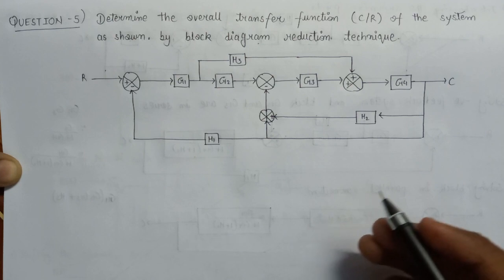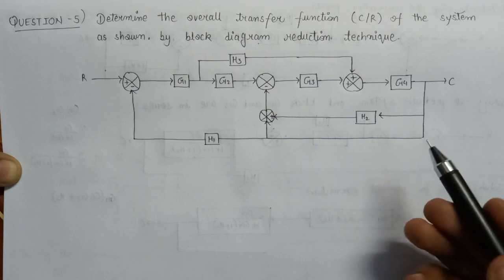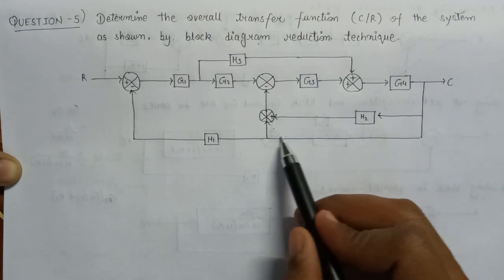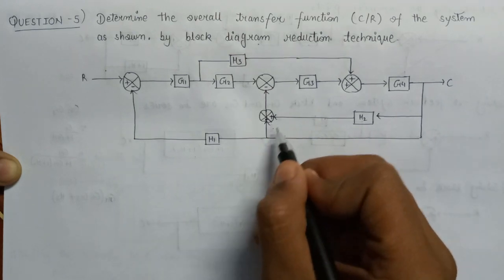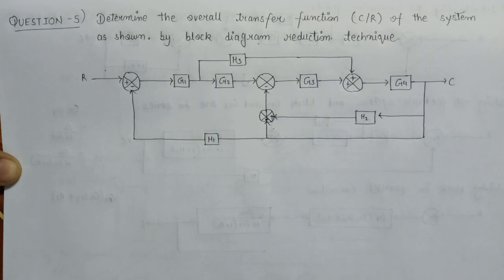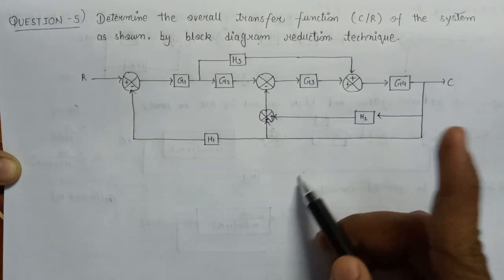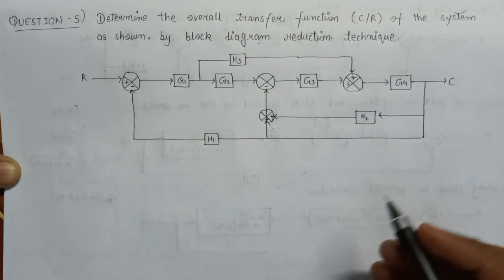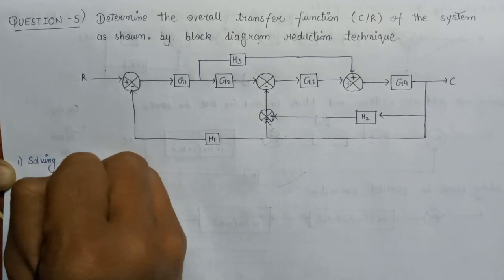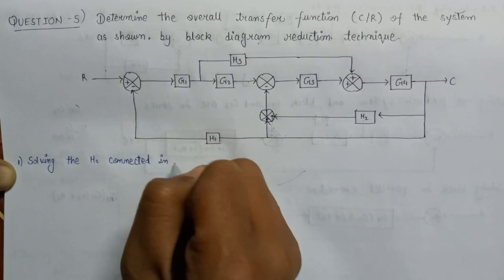Let's initiate the block diagram reduction technique. We need to find the point of initiation. Here is a feedback gain h2 that is connected in parallel with this branch, and both will get added up with this summer. Here the polarity is plus on both sides, so we can write h2 plus 1, or 1 plus h2, since the gain of the direct branch is 1. So our first step is solving h2 connected in parallel.